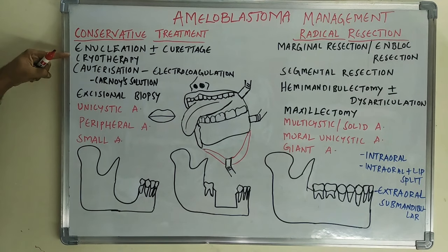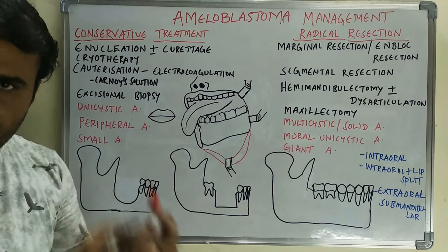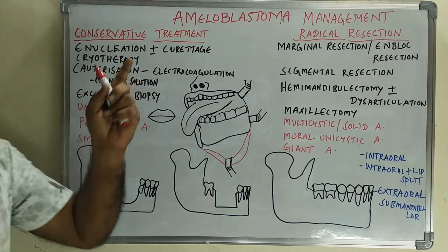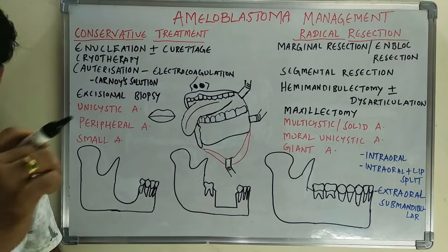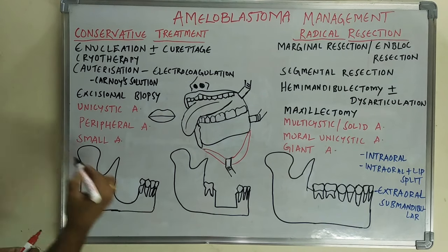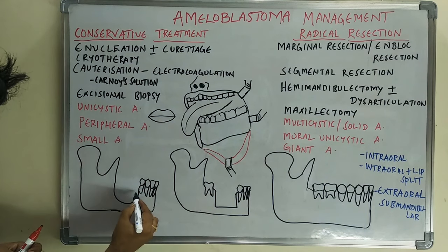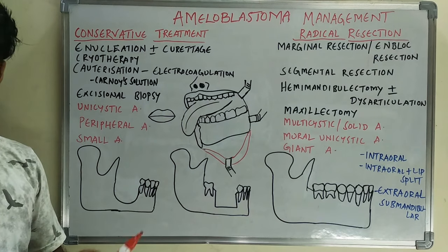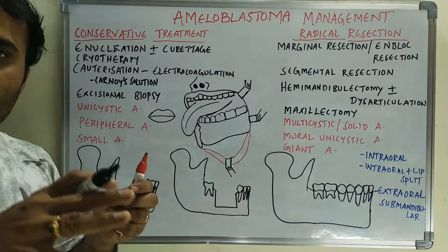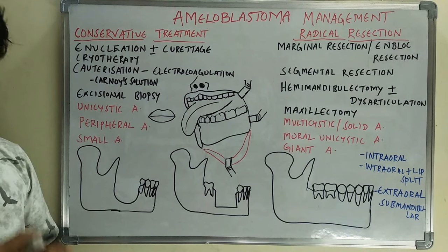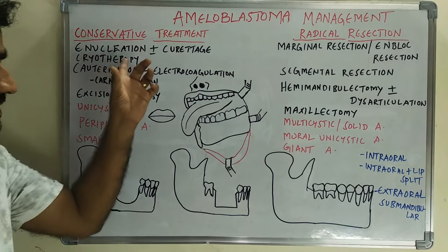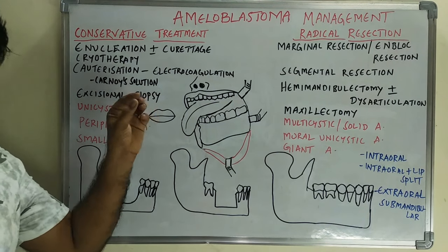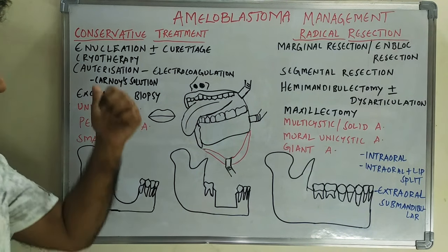Cryotherapy, electrocoagulation, and Carnoy's solution are adjuncts that are almost similar in purpose. After removing teeth and lining, cryotherapy uses a probe with liquid nitrogen applied at minus 62 degrees centigrade to the bone walls. Due to the extreme cold, surrounding bone cells and any invaded ameloblastic cells will die, leading to better treatment. These modalities should not be used as individual primary treatments but should be used along with surgery to improve outcomes.